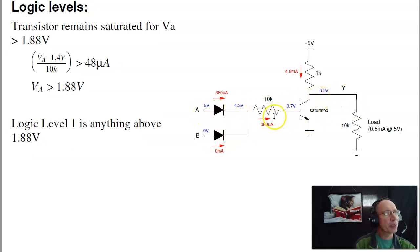The lowest A can be and saturate is, if this is 4.8 milliamps, I have to have at least 48 microamps flowing, and 0.7 plus 0.7 plus 48 microamps times 10k gives you 1.88 volts. So logic 1 for this circuit is anything above 1.88 volts.